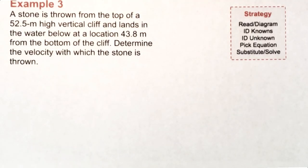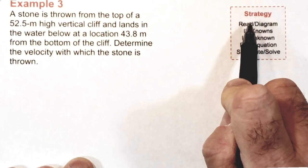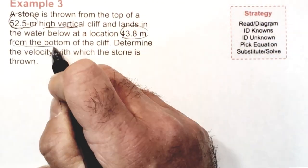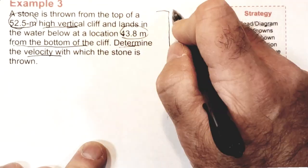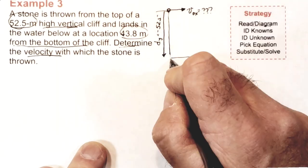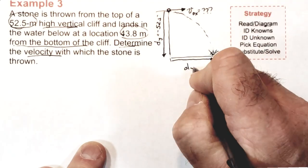We'll discuss example 3 a little bit more quickly, but we'll pay attention to the strategy. It begins with reading and diagramming. As you read, pay attention to the numbers. Try to figure out what they represent. When you diagram, show the initial location of the stone, the final location of the stone, and then label the DX, the DY, and the VOX.